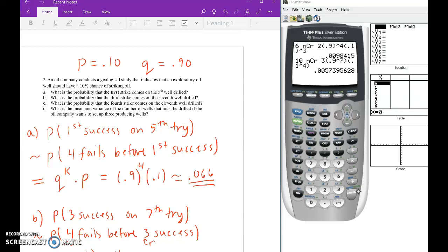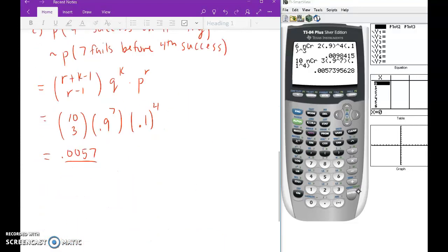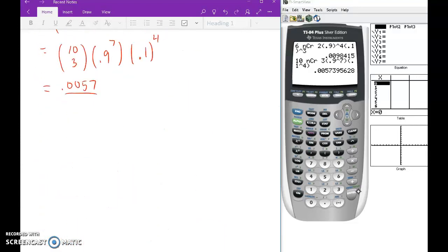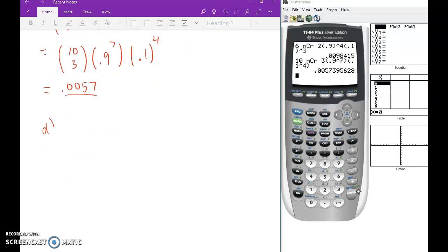Finally, letter D, what's the mean and variance of the number of wells that must be drilled if the oil company wants to set up 3 producing wells? So when you see this, 3 producing wells, that would be 3 successes. In other words, r is 3 there. All right, so remember, the nice thing about these distributions is they have really nice formulas for their means and standard deviations, means and variances, really. So this is actually letter D.